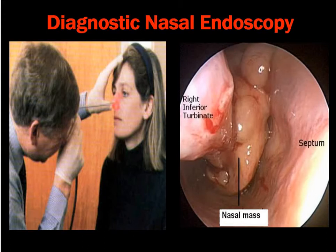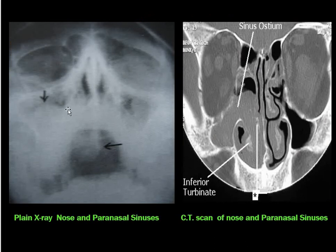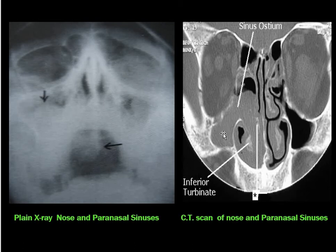CT scan of the nose and paranasal sinuses in coronal and axial parts are the gold standard investigation for antrochoanal polyp or any nasal mass. The diagnostic endoscope is passed into the nose and can show the mass - this is the nasal mass, the inferior turbinate, and the septum. The CT scan of the nose and paranasal sinuses again shows the mass in the maxillary antrum as a convex upward mass. This is the maxillary edema signifying a nasal mass. The CT scan shows the anatomy very clearly - the ostium, the sinus, and the polyp in the maxillary sinus coming into the nose, confirming the antrochoanal polyp.